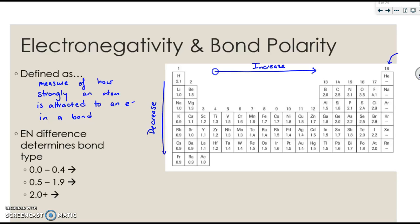If the difference is between 0 and 0.4, we have what we're going to call nonpolar covalent (NPC). If the difference is between 0.5 and 1.9, this is known as polar covalent (PC). Please feel free to abbreviate these.